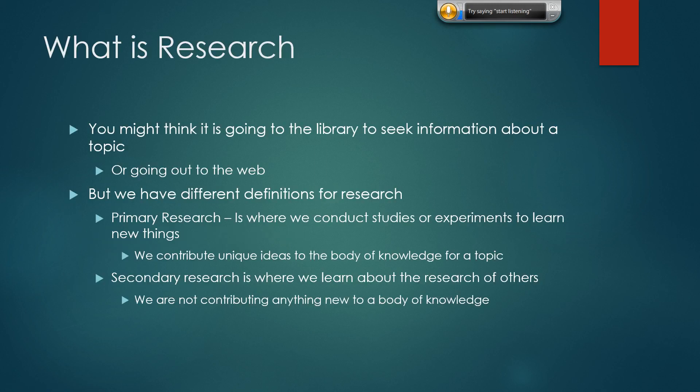So what is research? We talked about this in the previous presentation last week, but I'll go over it again. When you as college students think of research, you're probably thinking of going to the library and looking stuff up. But really we divide research into two different types: primary and secondary. Primary research is where research is conducted to create new knowledge — where there's a research question or hypothesis, and researchers are conducting experiments or doing some other type of research to create knowledge that doesn't exist anywhere else.